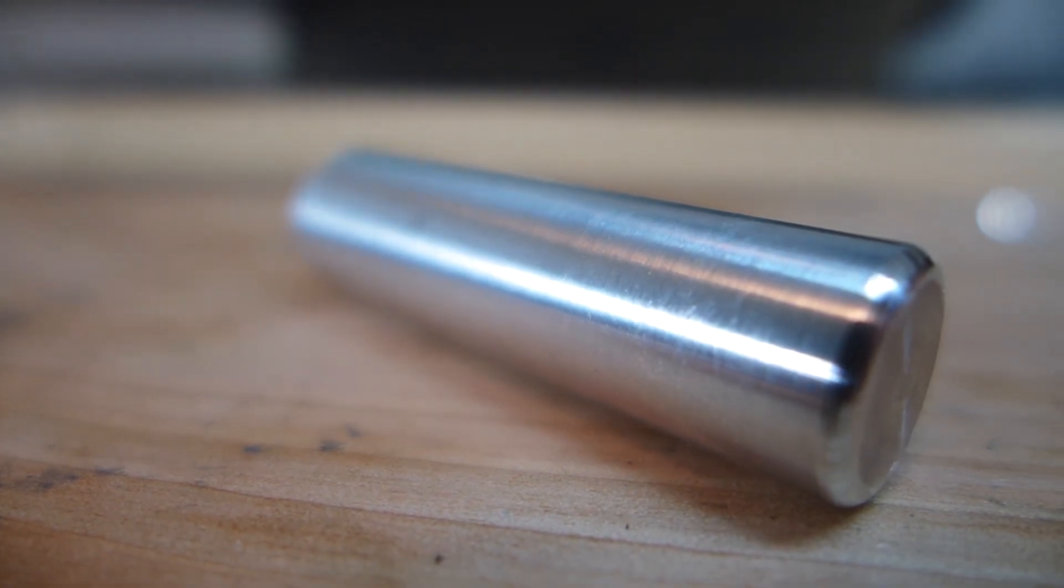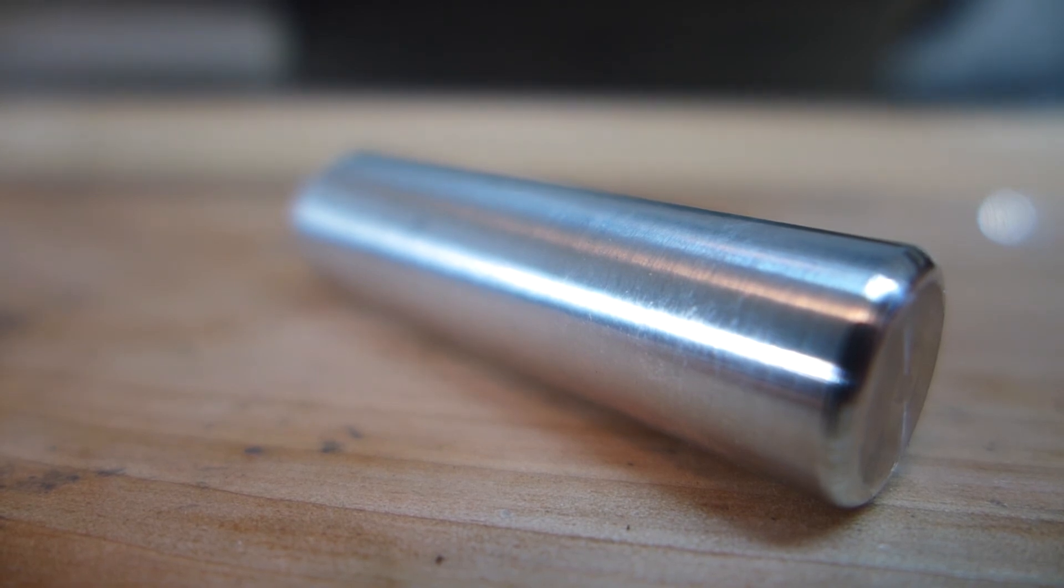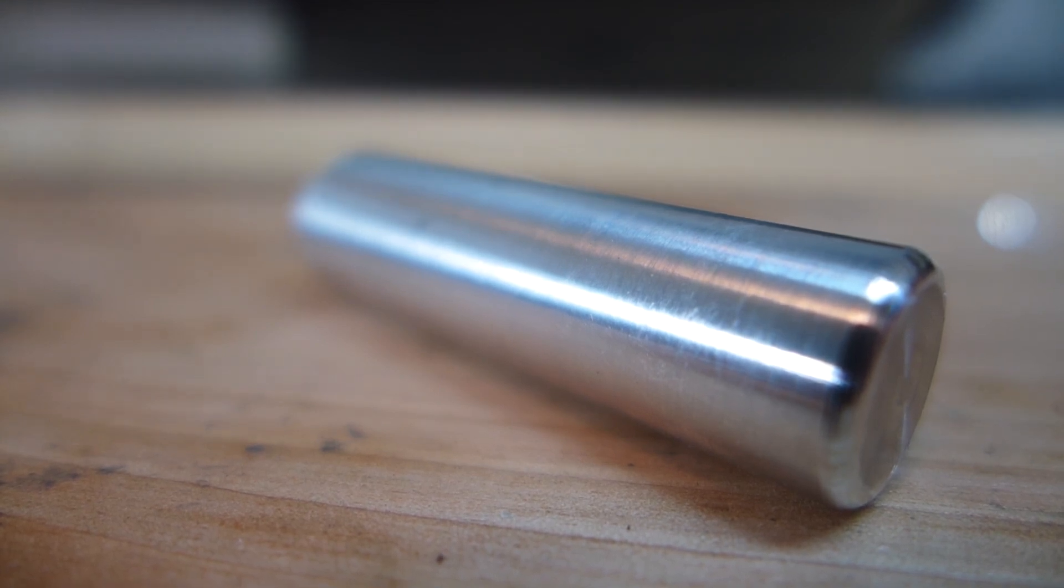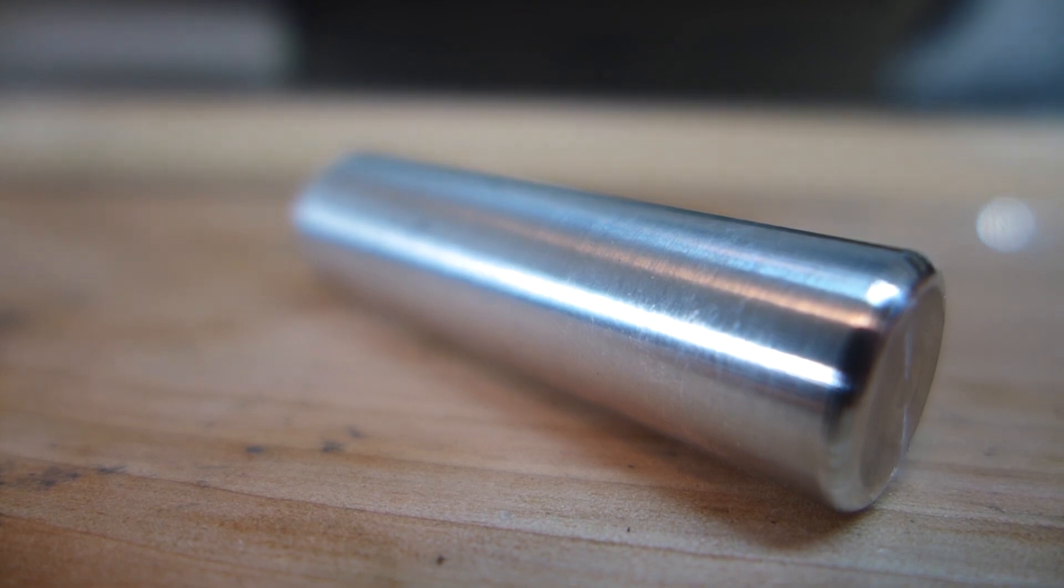After I cut it off, I flipped it around and put it in the jaws in the chuck so I could face and round over the other end and it got marked up a little bit. Of course, this part doesn't matter, it's not important, but maybe I clamped it too tight or maybe that's just unavoidable. I don't know.